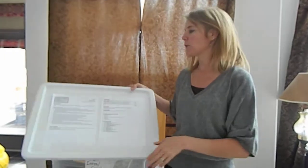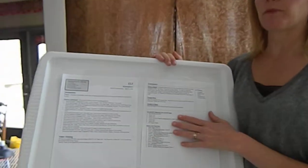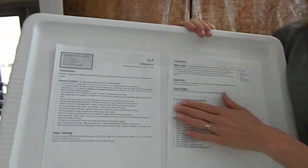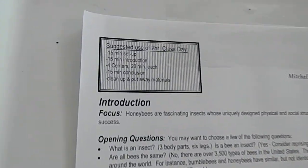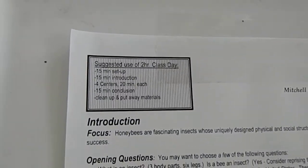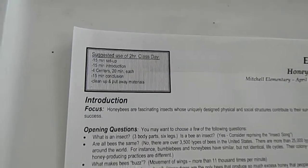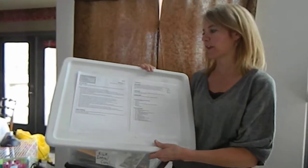As you know, we have our outline taped to the top of the boxes, and we have a suggested time of usage for class time. You want to do 15 minutes of setup, 15 minutes of intro, four centers of 15 minutes each, and then a 15-minute conclusion and a 15-minute cleanup. That fills up your two-hour window nicely.